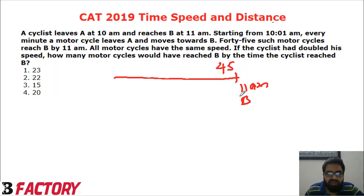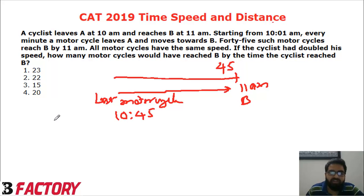That means the last motorcycle which started from A must have started at 10:45, because 10:01 is the first bike and this should be the last. That means time taken by a motorcycle to cover this distance is 15 minutes.